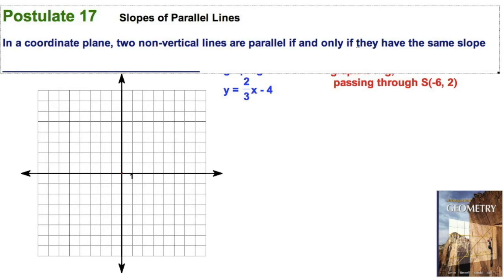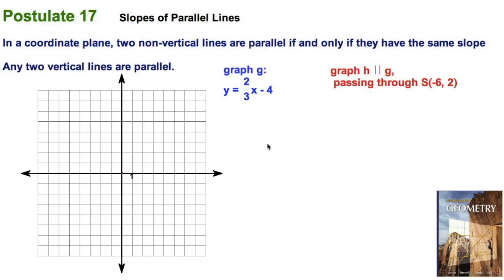That's that bi-conditional statement. The logic is going to work in both directions. If two lines are parallel, they have the same slope. If two lines have the same slope, they are parallel. Now, there is the exception. Notice it says two non-verticals. What if they're vertical? And there's our exception.